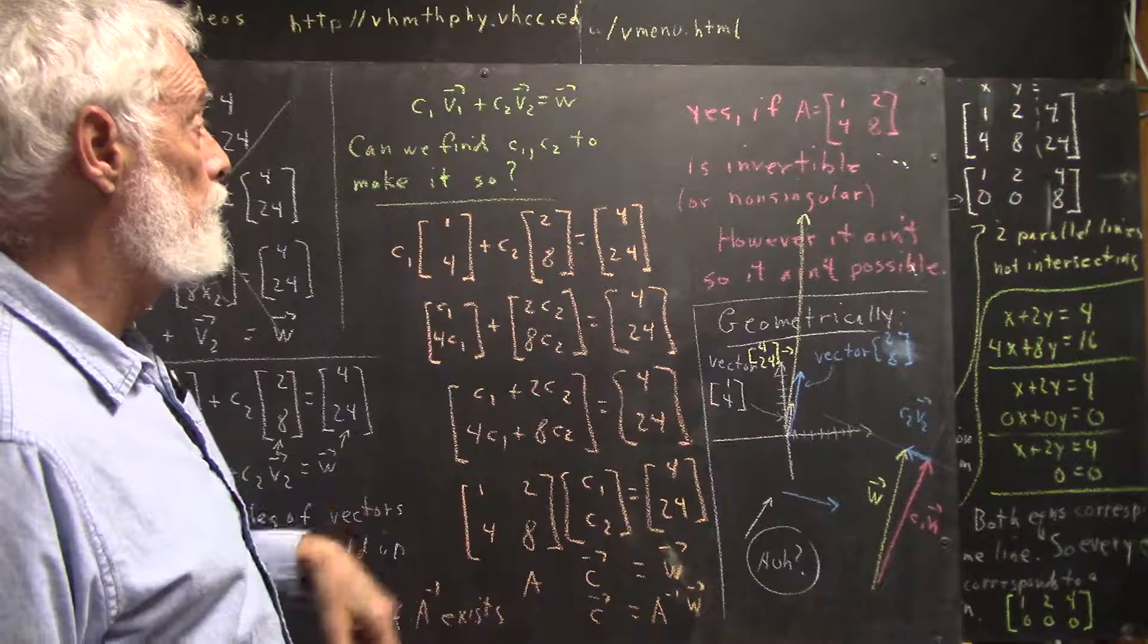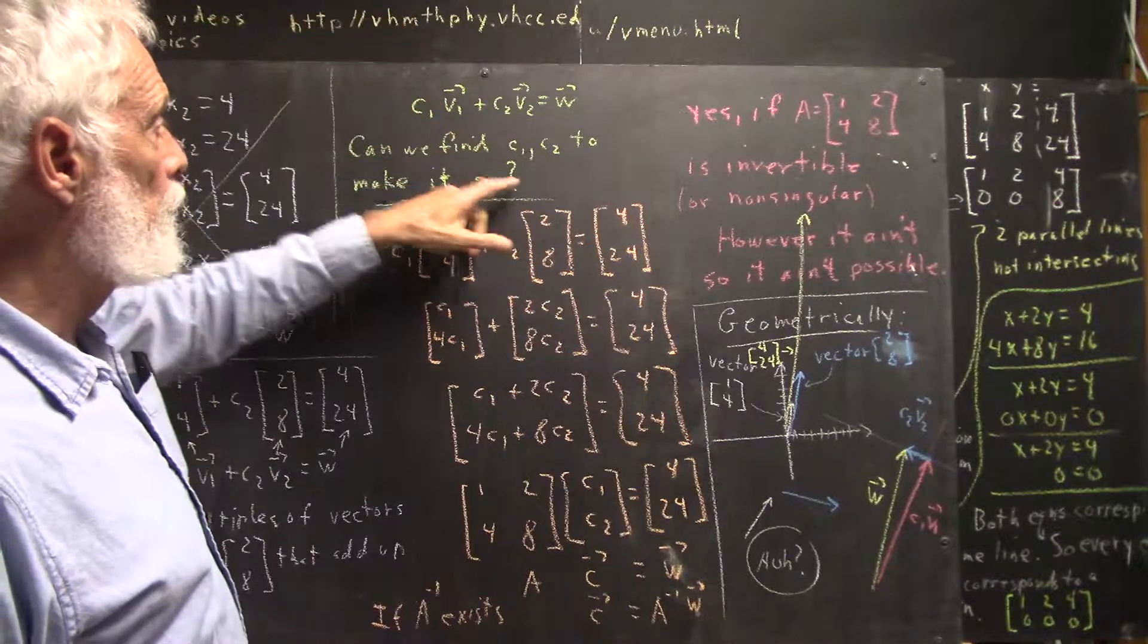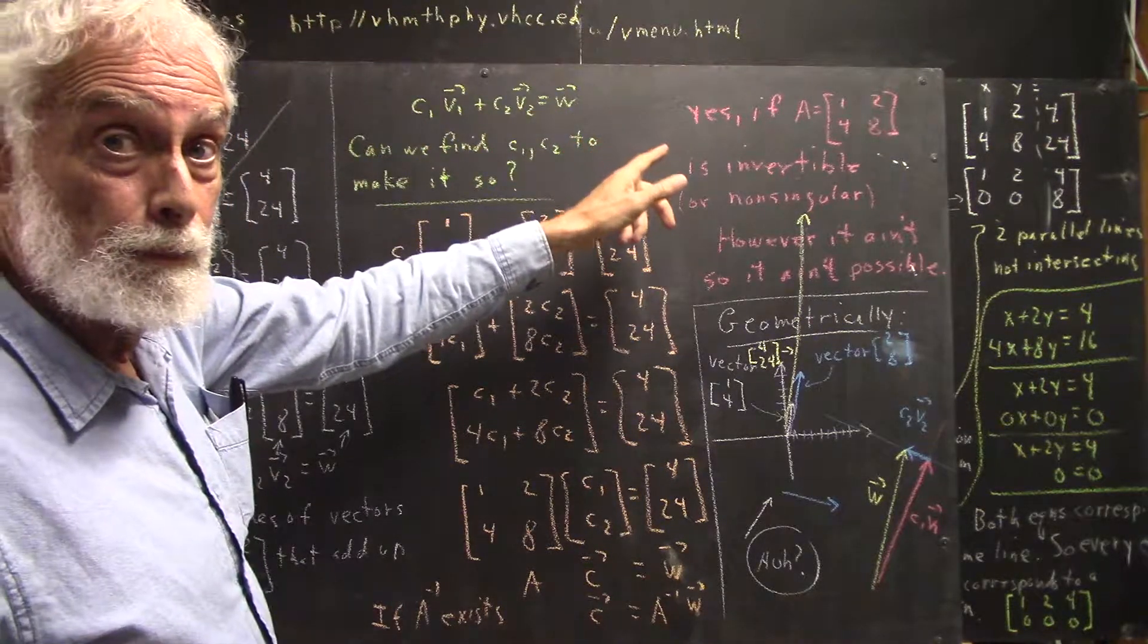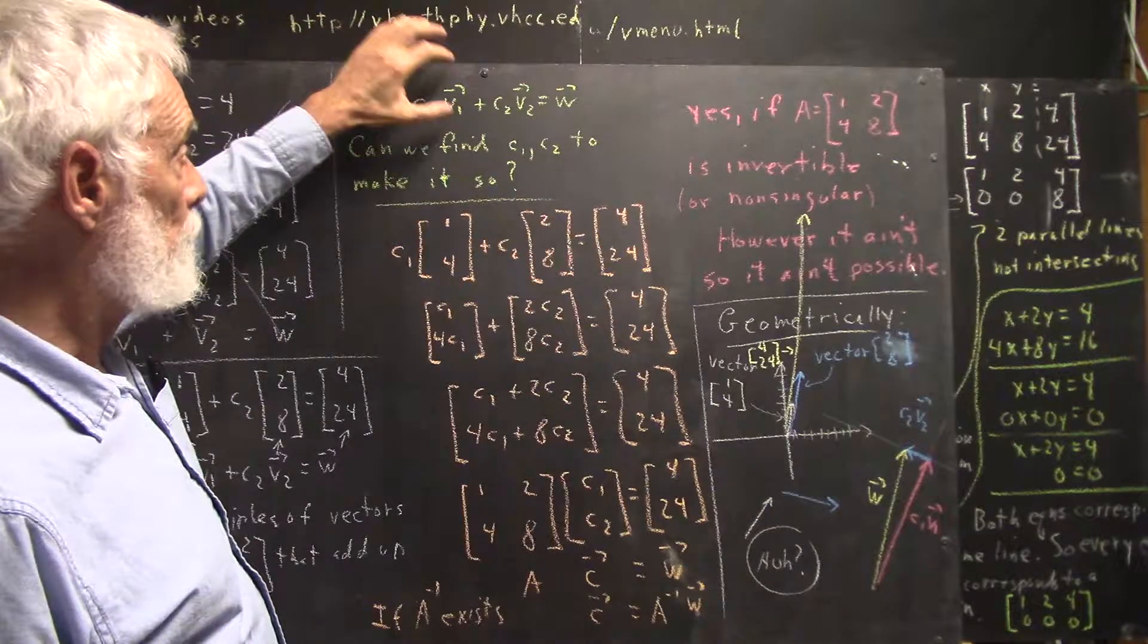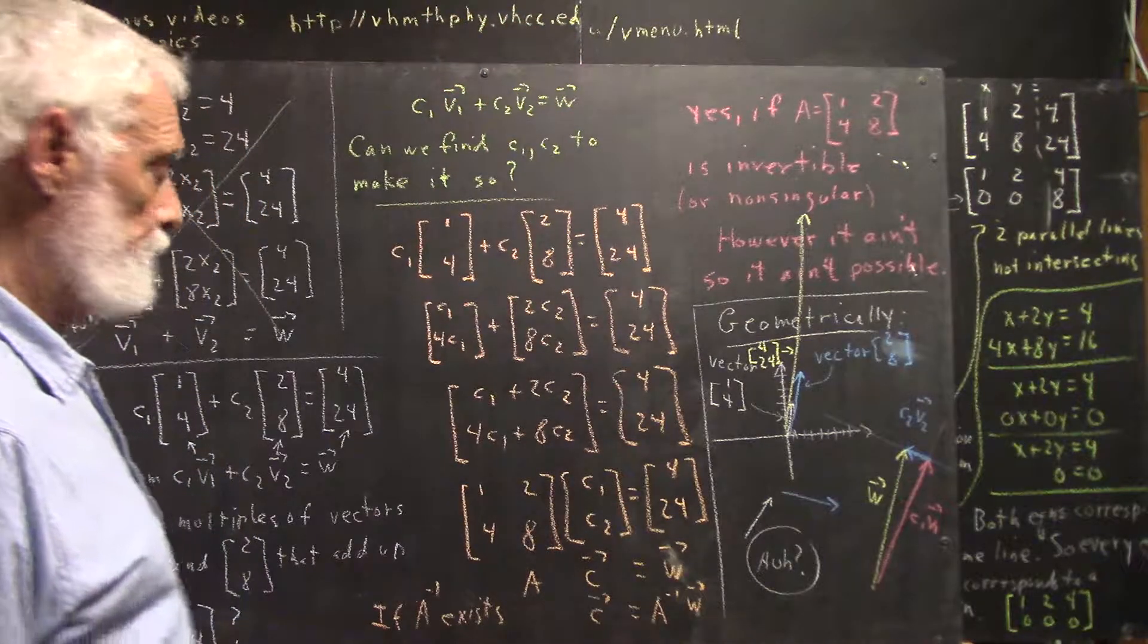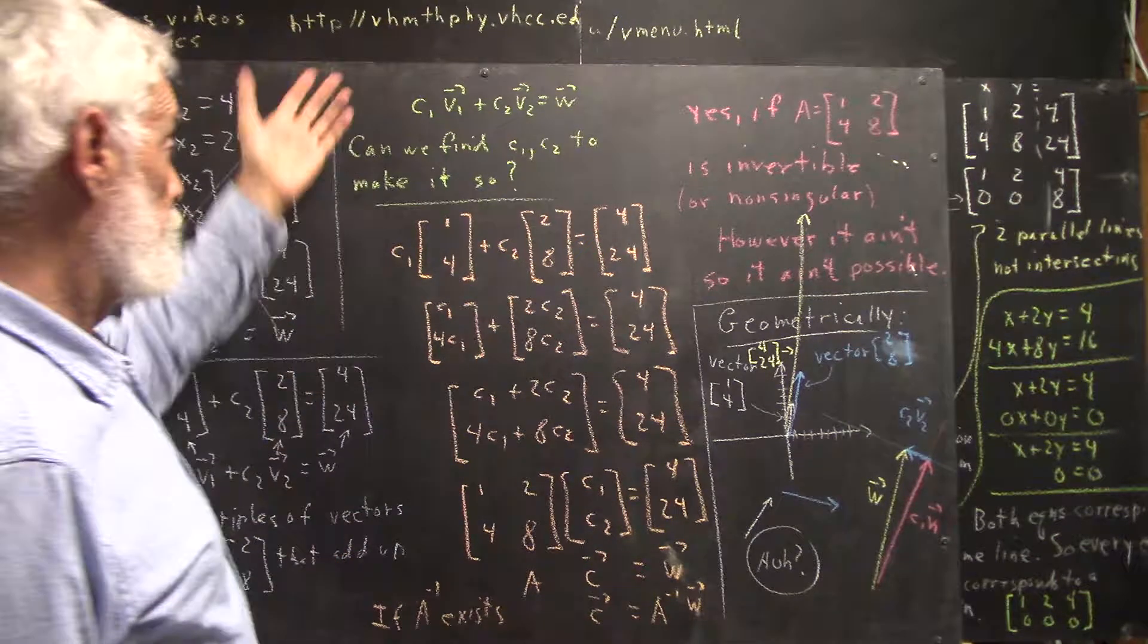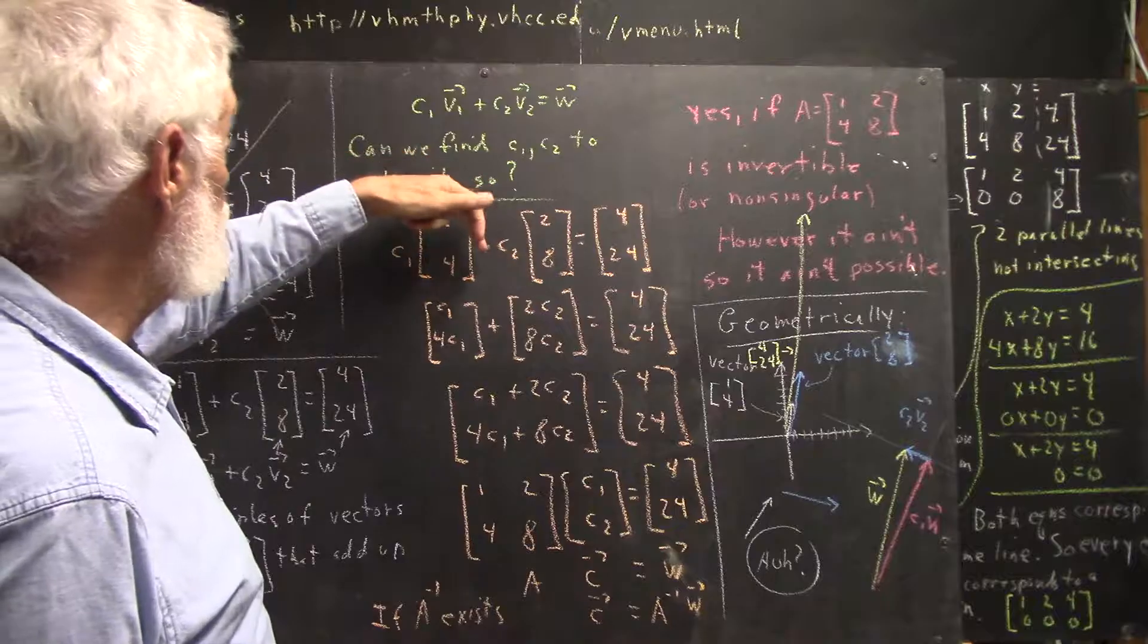Again, v1, v2, and w are vectors. So the question now is, can we find c1 and c2 to make this so? If so, that means there is a multiple of v1 and a multiple of v2 that add up to w. It's a very important question.